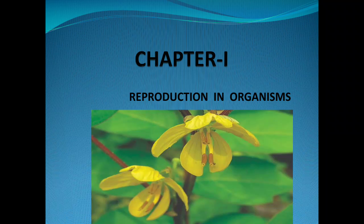A banana plant lives for one to two years, and a banyan tree lives for about 300 years. So we have seen that no organism is permanent on the earth. Therefore, every organism has a goal to keep a copy of itself on the earth, for which a process is seen among organisms.